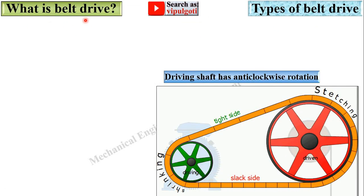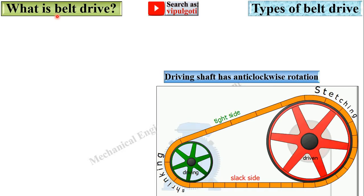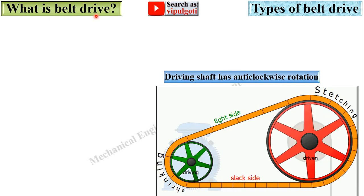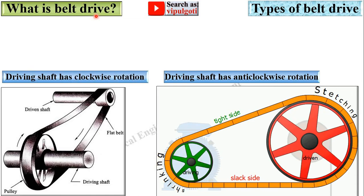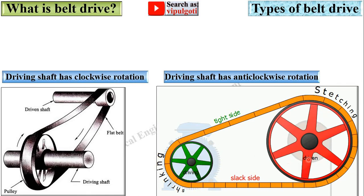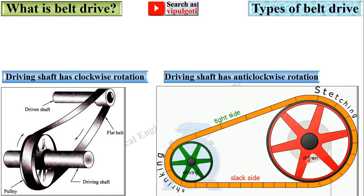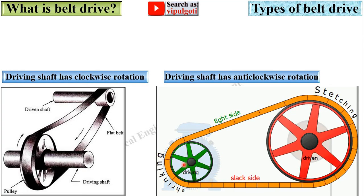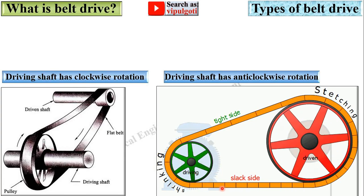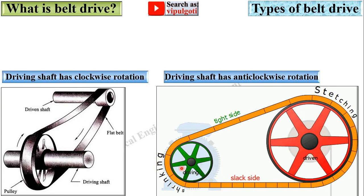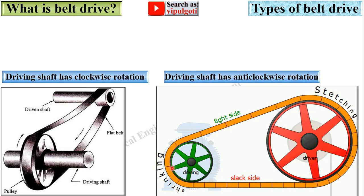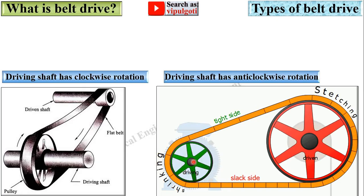Before starting, first try to understand the meaning of belt drive. In this figure you can see there are two pulleys — driving pulley and driven pulley — on which the belt is mounted. This is the driving shaft, and here the driving shaft is rotating in the anti-clockwise direction.